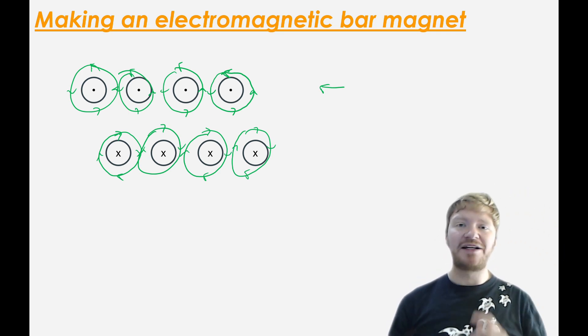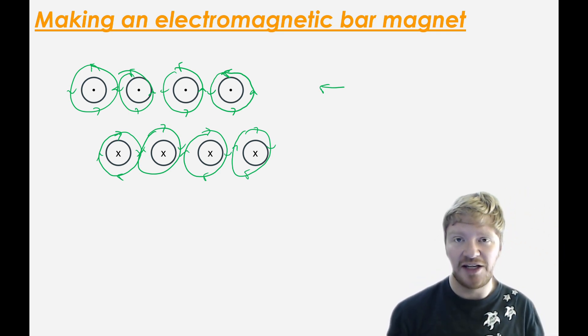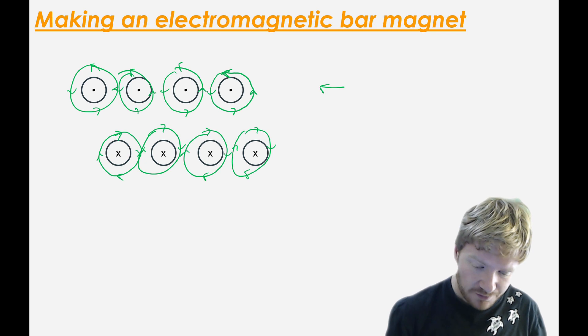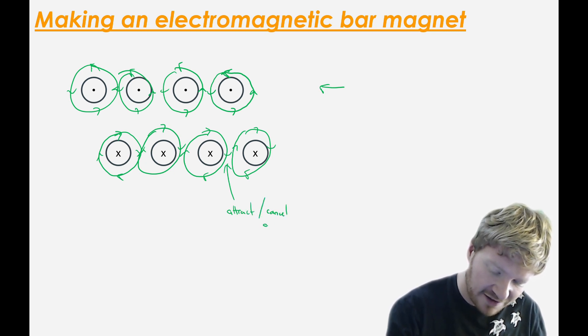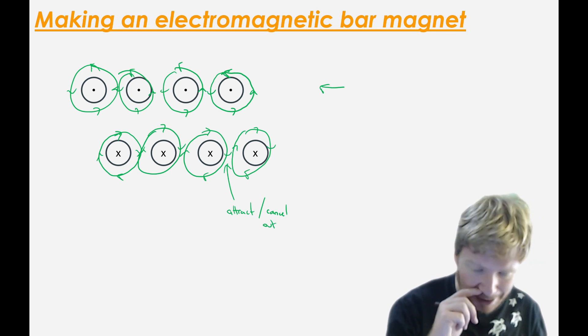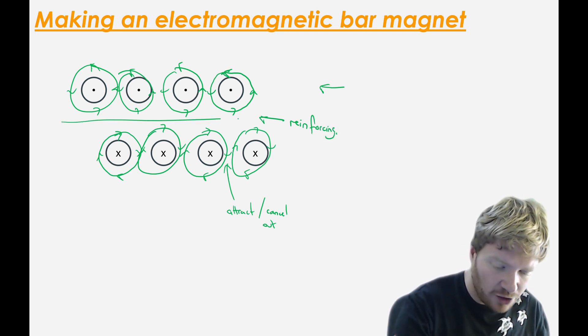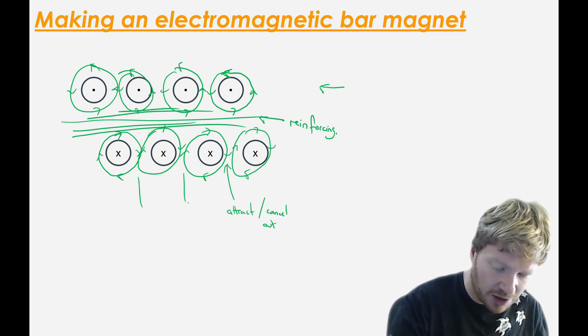Now, if you remember our magnetic field line rules, we said that they can never cross. So what will happen is here, where the two are in opposite directions, they'll actually attract each other a little bit. Or you can kind of imagine them as cancelling out. So it's not like they're not going to be there. These ones here, these are reinforcing each other. So what we get is lots of field lines going through the center here and none at all coming out this way.